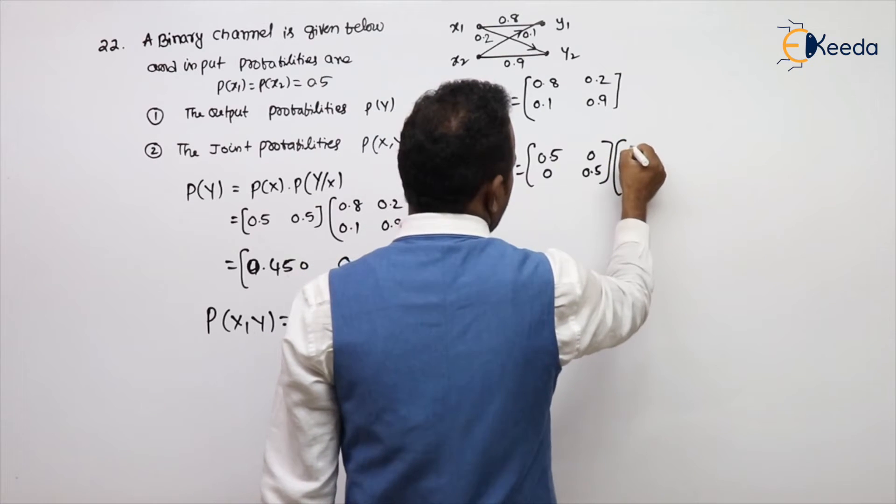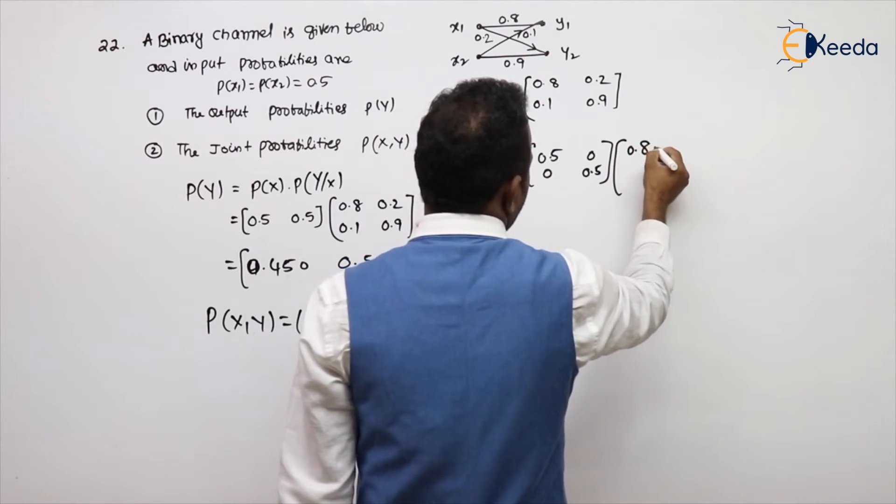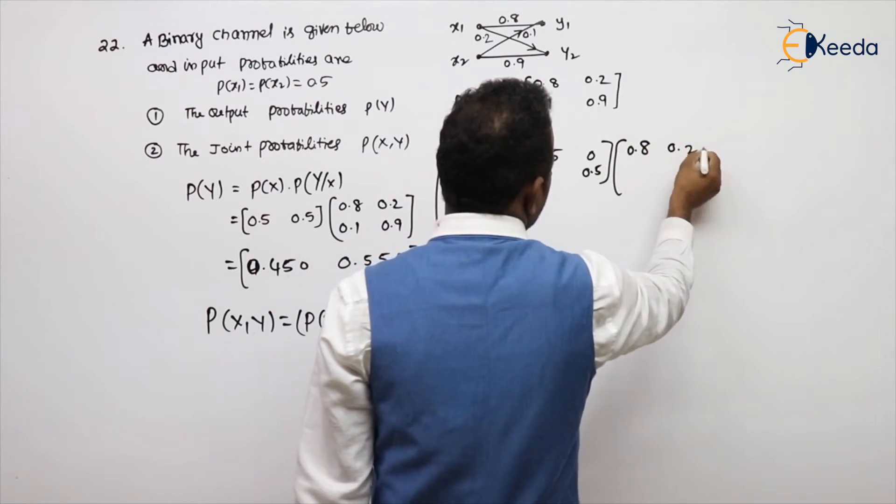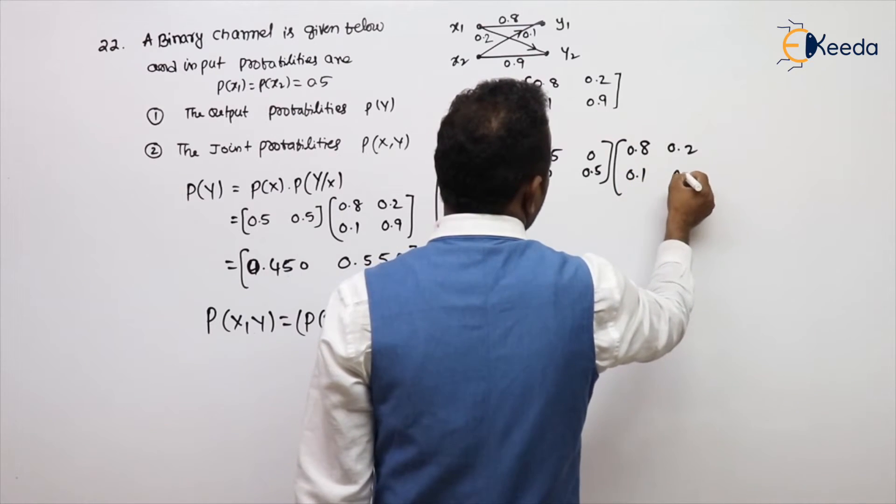What is the P(x) diagonal? P(x) diagonal is nothing but, follow, I am writing directly joint probability. Diagonal means write input probabilities in diagonal manner. Another conditional probability matrix: that is 0.8, 0.2, 0.1, 0.9.